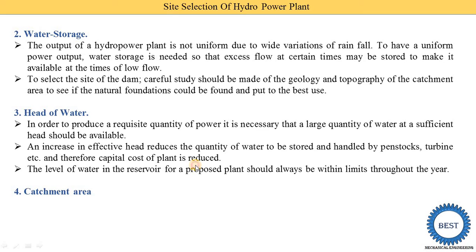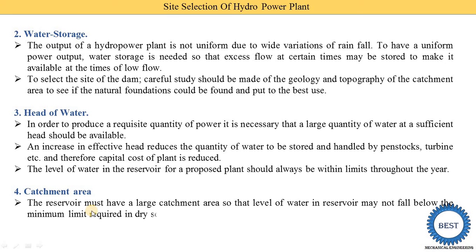Fourth point is the catchment area. The reservoir must have a large catchment area so that the level of water in the reservoir may not fall below the minimum limit required in a dry season. The area behind the dam is required to be larger. The distance between the dam and the origin point of the rivers should be larger, meaning we have a large catchment area. Larger the catchment area, more water is coming; smaller the catchment area, the quantity of water available is lower.